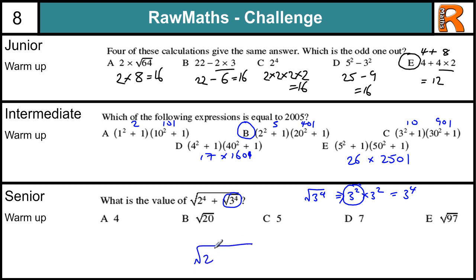So we're left with the square root of 2 to the 4 plus 3 squared. 2 to the power of 4. We did that up there with 16. And 3 squared is 9. So that's the square root of 25, which is 5, which is C.